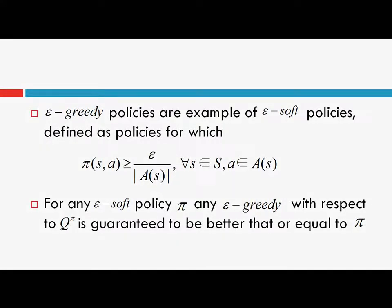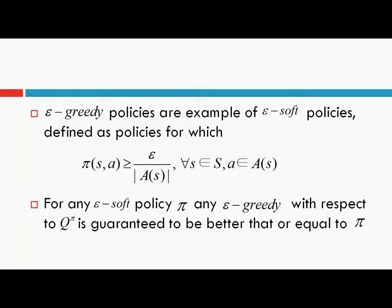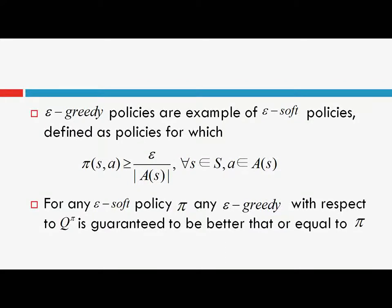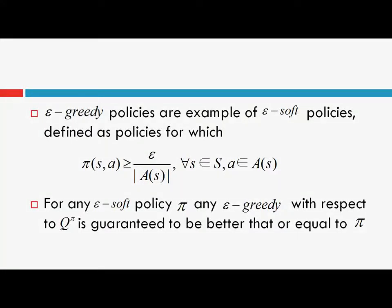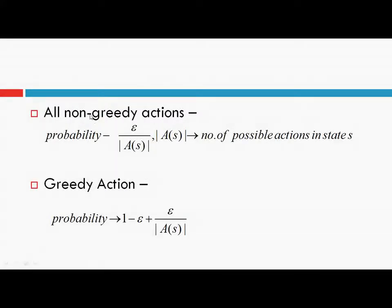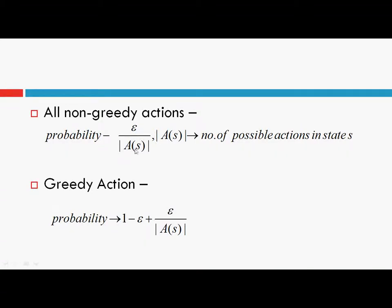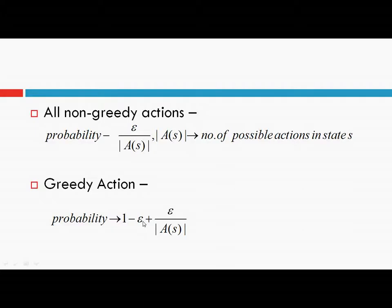Both ways of writing are correct because in random action selection there is a possibility that the selected action is a greedy action. Therefore, the total probability becomes 1 minus epsilon plus epsilon over mod A_s. We can make the greedy and non-greedy actions explicit: for non-greedy actions the probability is epsilon over mod A_s, and for the greedy action it is 1 minus epsilon plus epsilon over mod A_s.